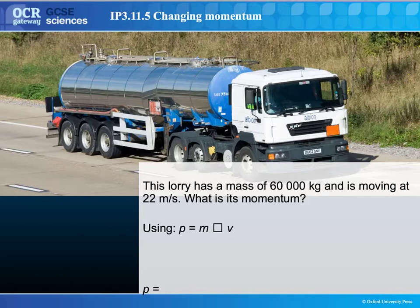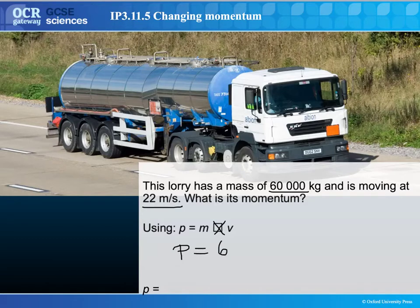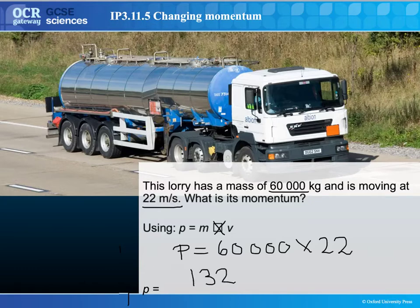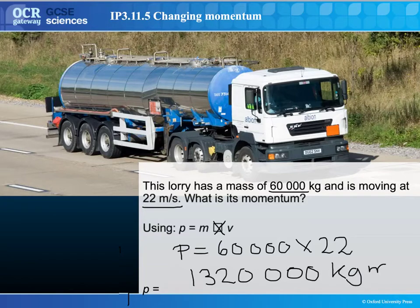Here is an example. This lorry has got a mass of 60,000 kilograms and is moving at 22 meters per second. What is its momentum? The equation is P equals M times V, or momentum equals mass times velocity. To work out P, we need to do 60,000 times 22. If we do this calculation, we end up with 1,320,000 — not forgetting the units of momentum, which are kilograms meters per second.